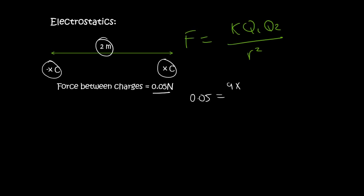So the 0.05 is the force. The constant of k is always going to be 9 times 10 to the 9. q1 we'll just say x. q2 we can also say x. Remember we don't include the negative. And the distance is 2. Please remember the square.